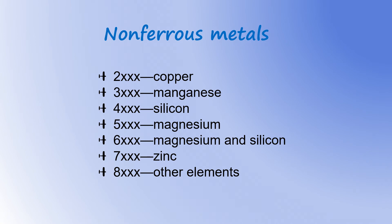Using this list, we can determine the major alloying element in any aluminum alloy by the first digit in the four-digit numbering system. For example, in any aluminum alloy starting with the number 2, its main alloying element is copper, and any aluminum alloy starting with the number 5 would have magnesium as its main alloying element.